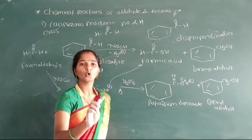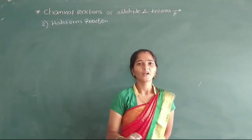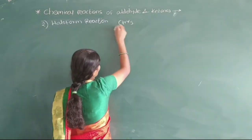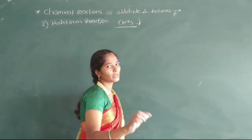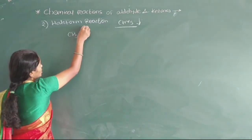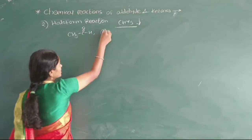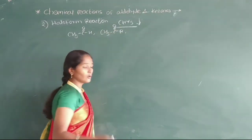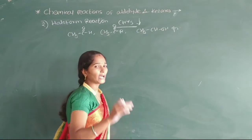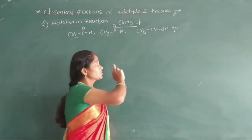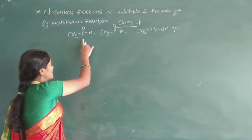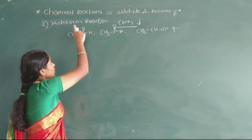Now we see the second name reaction of aldehydes and ketones — that is the Haloform reaction, meaning formation of CHX₃. This Haloform reaction is given by acetaldehyde (CH₃CHO), all methyl ketones (CH₃COR), and all alcohol compounds containing the CH₃CHOH group. These three groups undergo the Haloform reaction. Only acetaldehyde among aldehydes carries out this Haloform reaction positive. Second, CH₃COR — that is methyl ketones. Third, all alcohol compounds containing CH₃CHOH group.